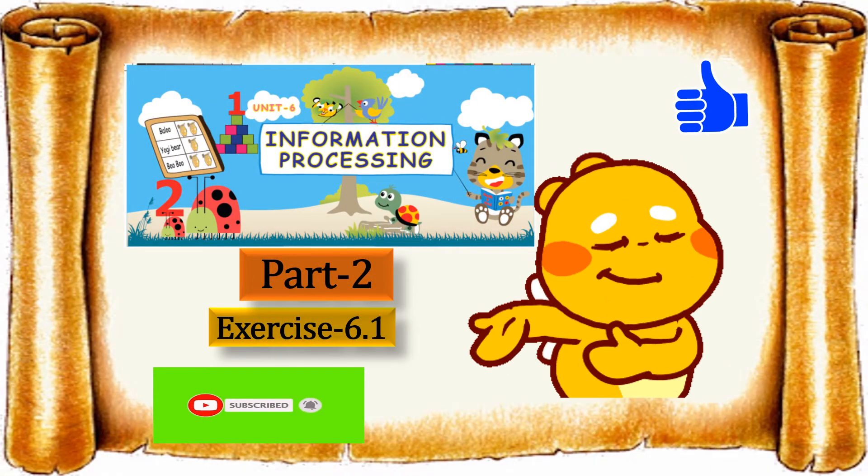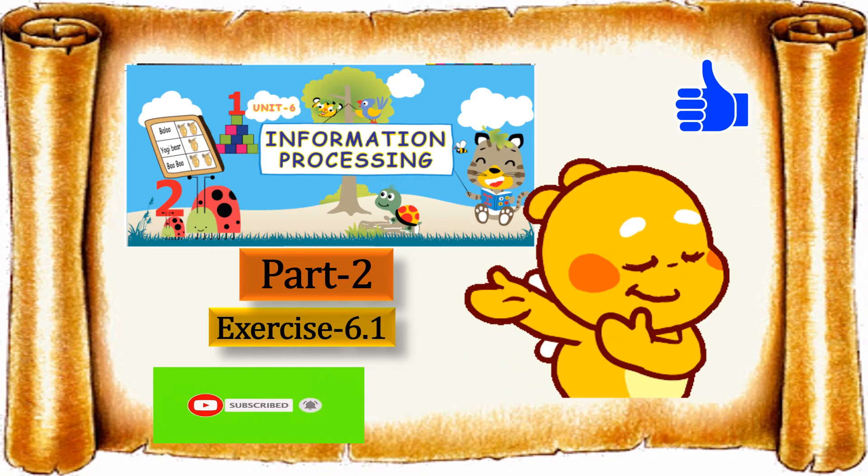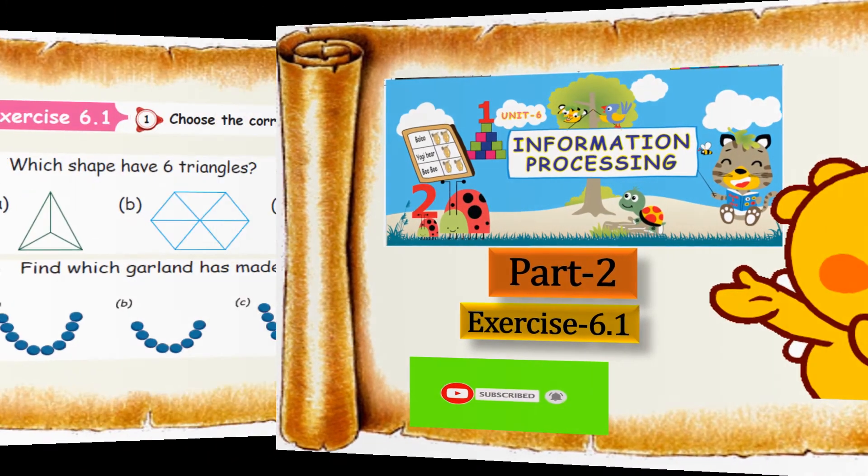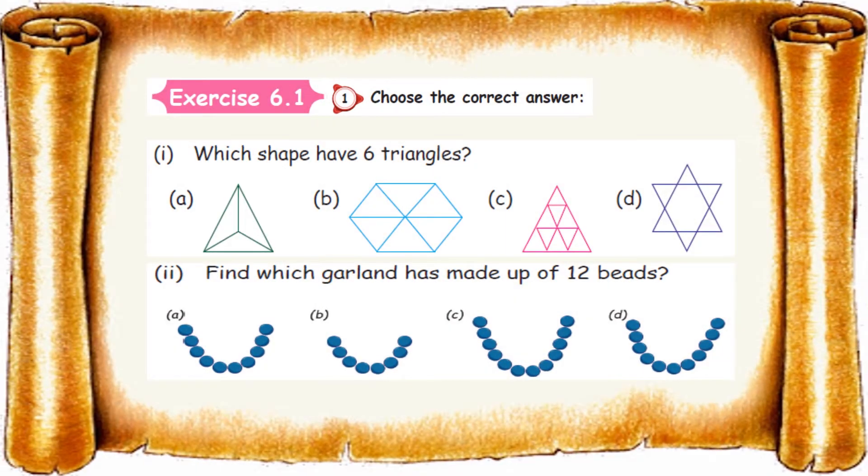Unit 6, Information Processing, Part 2. In this session, we are going to learn about Exercise 6.1. First one, choose the correct answer. Which shape have 6 triangles?